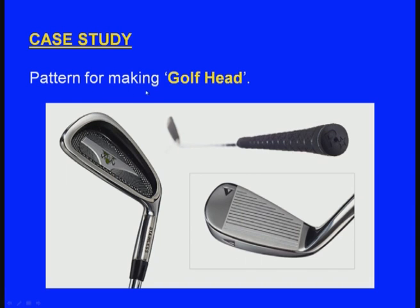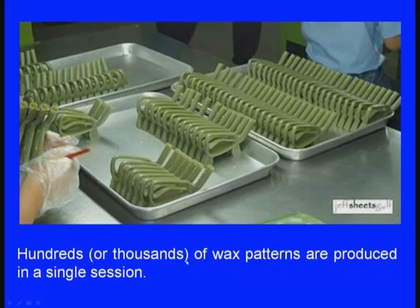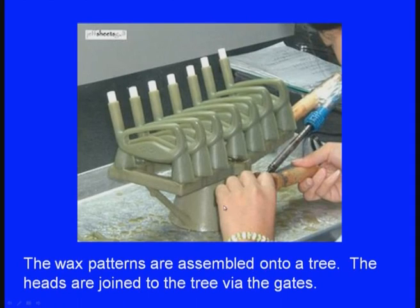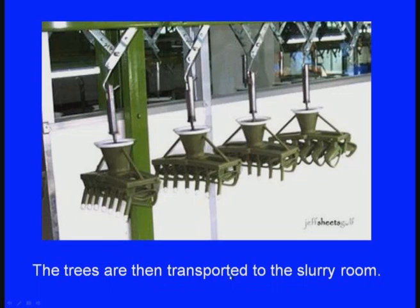Let us take an example case study: pattern making for a golf head. This is what the golf head looks like — it is manufactured by investment casting process. This is the typical wax injector. Hundreds or thousands of wax patterns are produced in a single session. The wax patterns are assembled onto a tree — this is the common tree. Here we can see 7 patterns assembled with a single tree. The heads are joined to the tree via the gates. These trees are then transported to the slurry room, where the ceramic slurry is prepared and the pattern assembly is dipped inside.